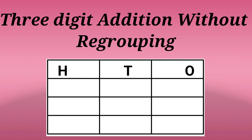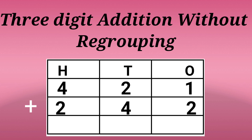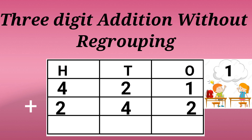Now let's see the second sum. 421 plus 242. First we add the ones space. 1 plus 2. 1 in the mind and 2 in the finger. 1 after 2, 3. So the answer is 3.